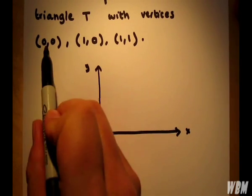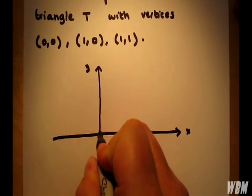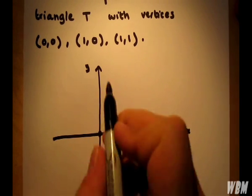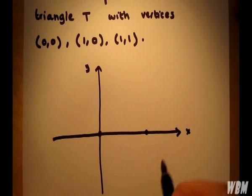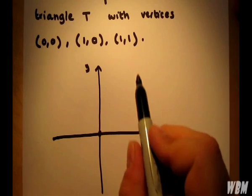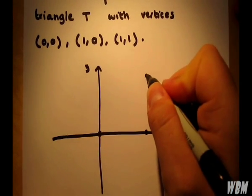The first point is at the origin. The second point is x equals 1, y equals 0. And the final point is at (1,1), which is about there.